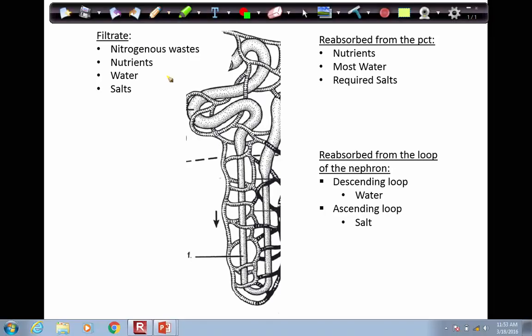The structure of the PCT is built to allow substances to be reabsorbed into the blood. It is formed of a single layer of cuboidal epithelial cells that contain many microvilli. Recall that microvilli are small finger-like extensions built to allow for reabsorption. The microvilli allow for reabsorption of nutrients, most water, and required salts.